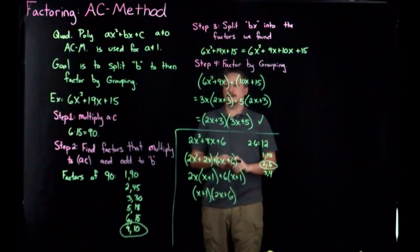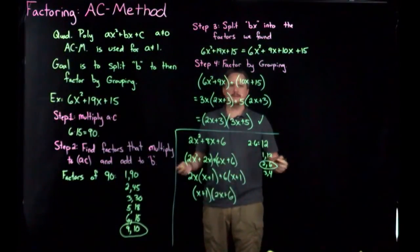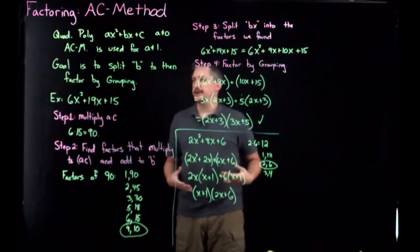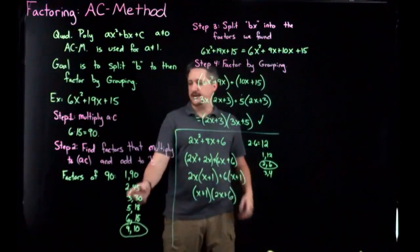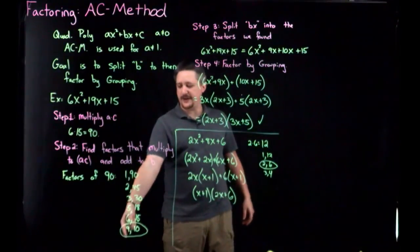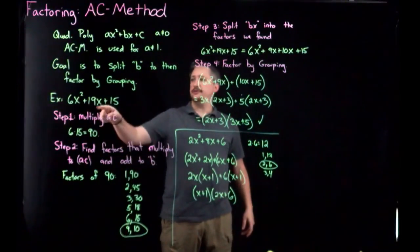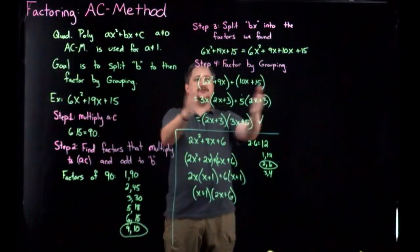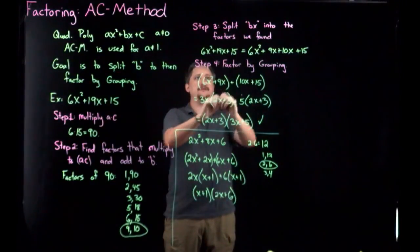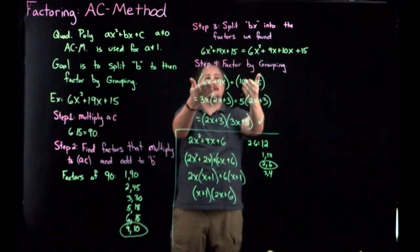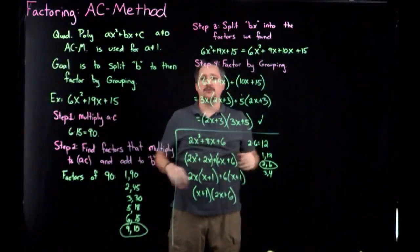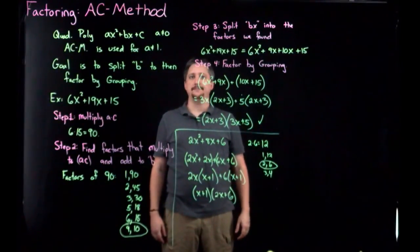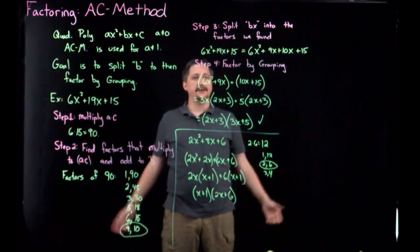The only tricky part is taking A times C to get a number and then factoring that number to find something that multiplies to it but adds to B. Once you've split it and written it as four terms, it's just factor by grouping — just like we covered in factoring by grouping. So that's it, thank you.